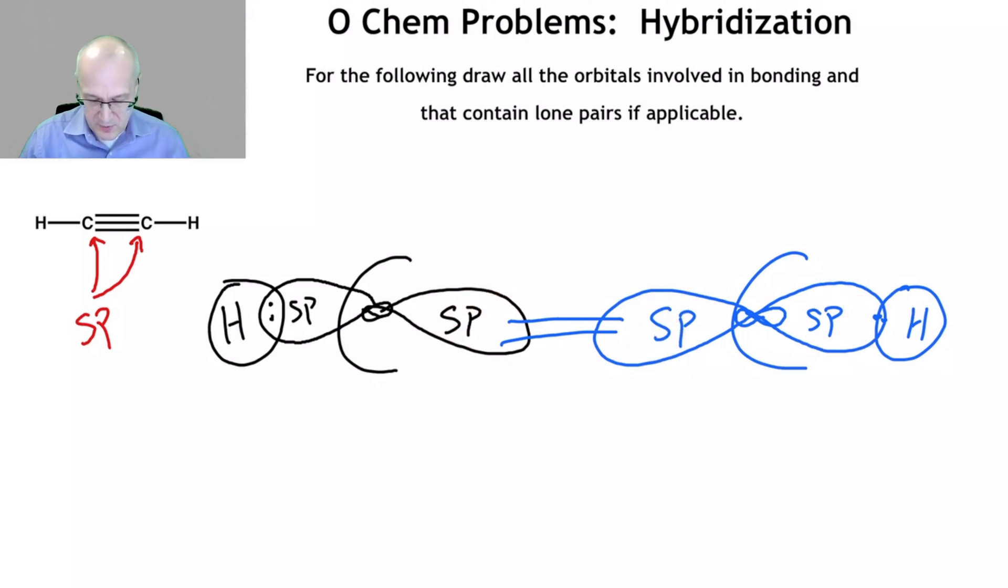This is a different orbital. This is a different orbital. So there's really four orbitals drawn here, not two. Okay. This is not a p orbital.